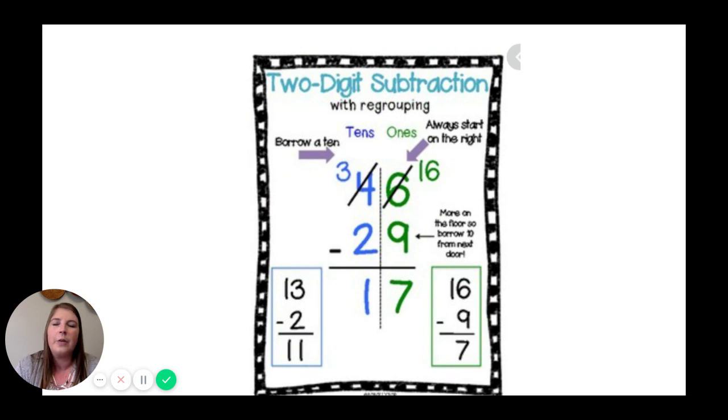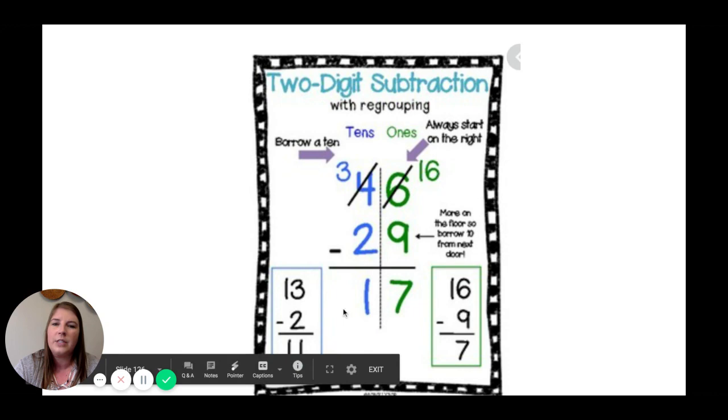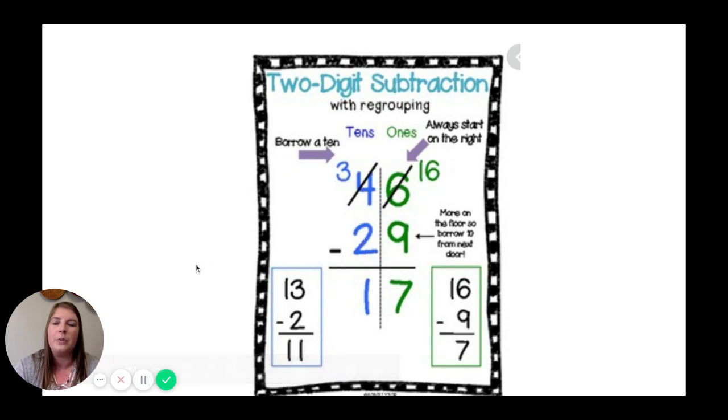Same thing for subtraction. There will be some times where you do not need to regroup and sometimes when you do. So for example, 46 minus 29. 6 minus 9. We do not have enough ones. So we need to borrow. We need to borrow one ten. So the four tens becomes 3. And add that 10 to the ones place. 6 plus 10 equals 16. Now we have enough ones. 16 minus 9 equals 7. And then we go to the tens place. 3 minus 2 equals 1.